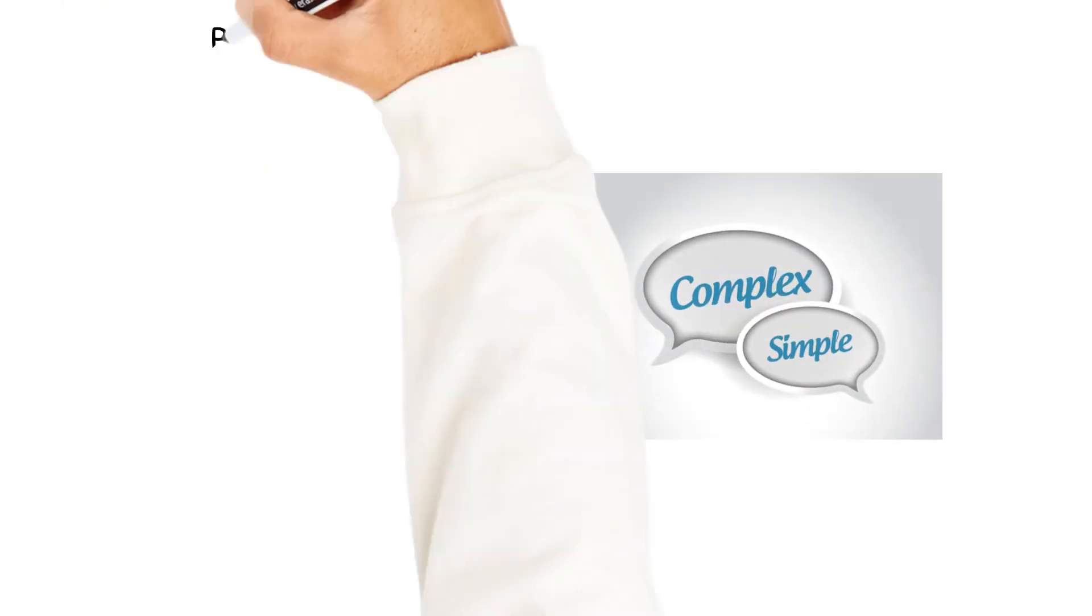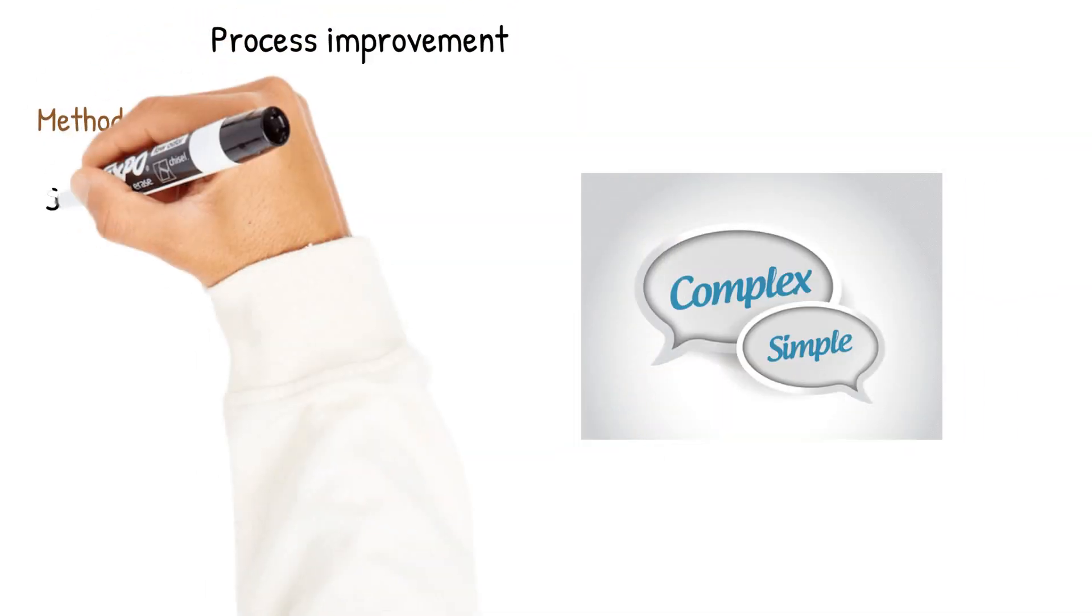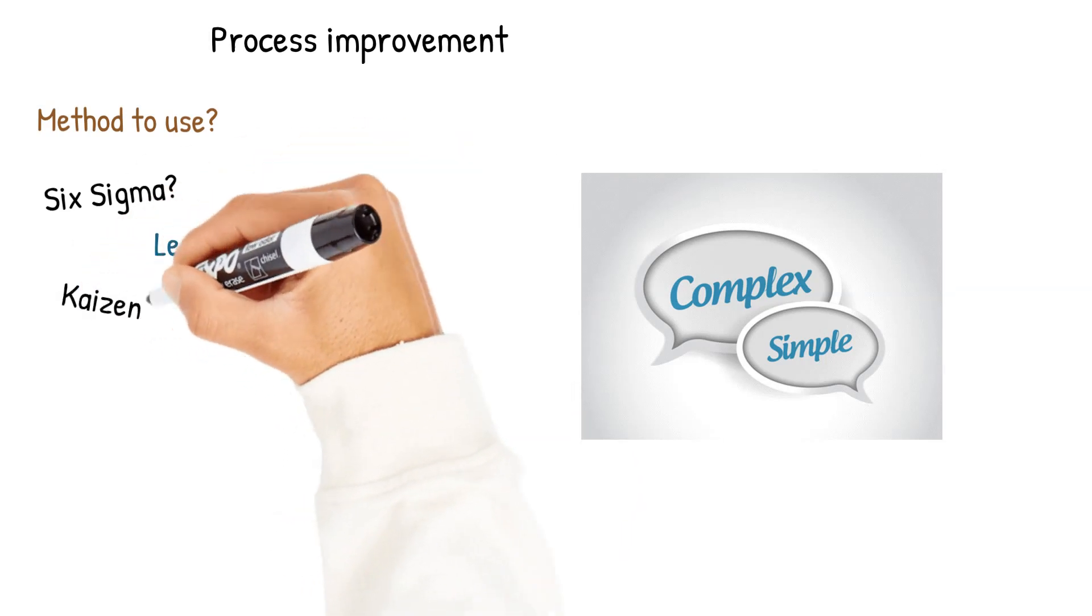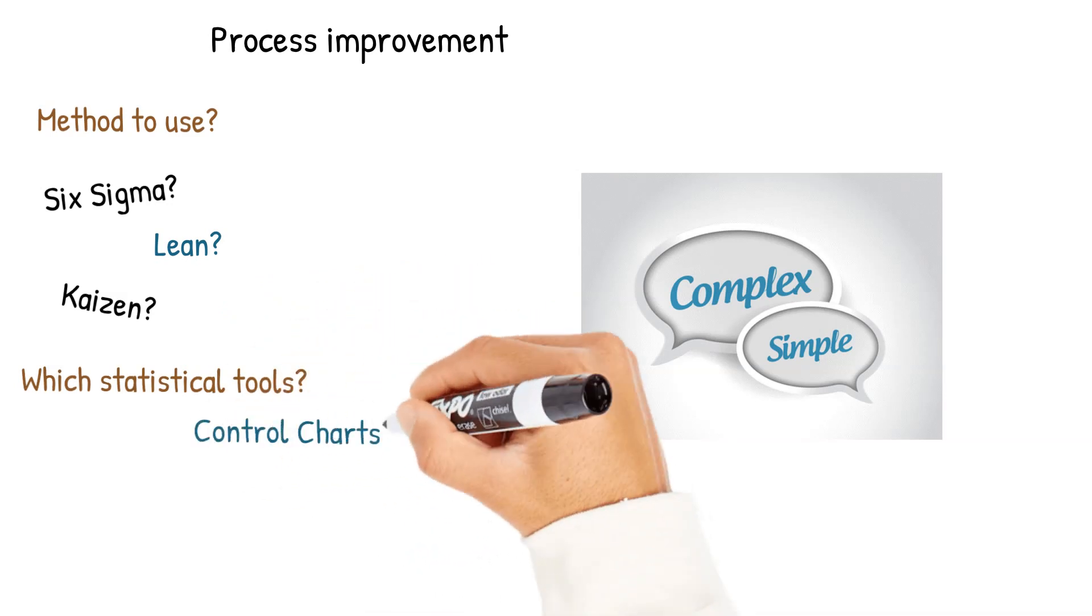Life has gotten much more complex and so has process improvement. The question is what method do you decide to use? There are so many: Six Sigma, Lean, Kaizen, and what about all the statistical tools? Some are easy, some are very complex.